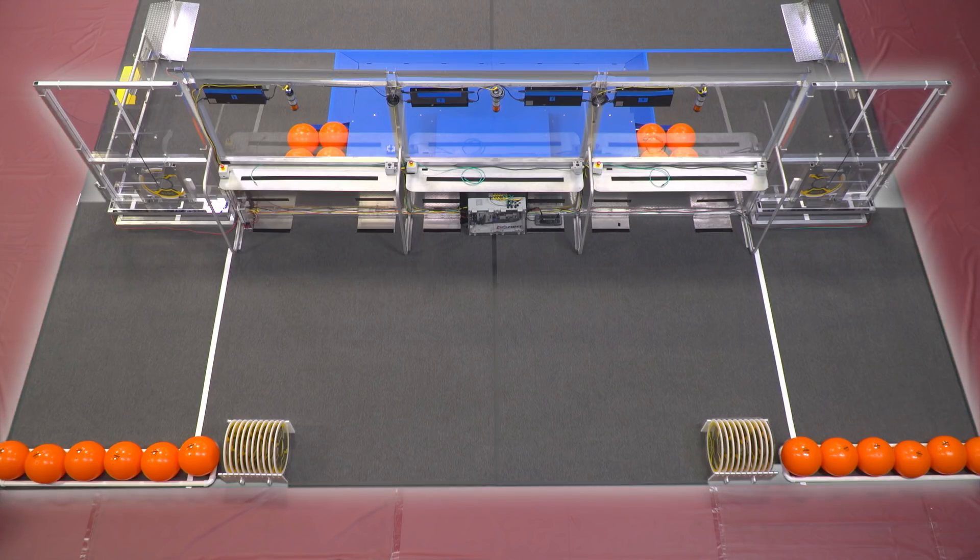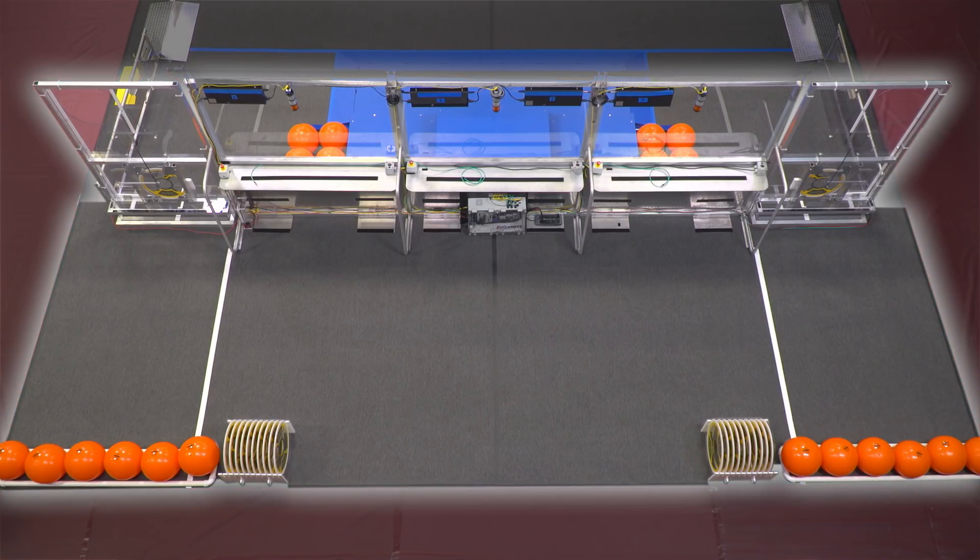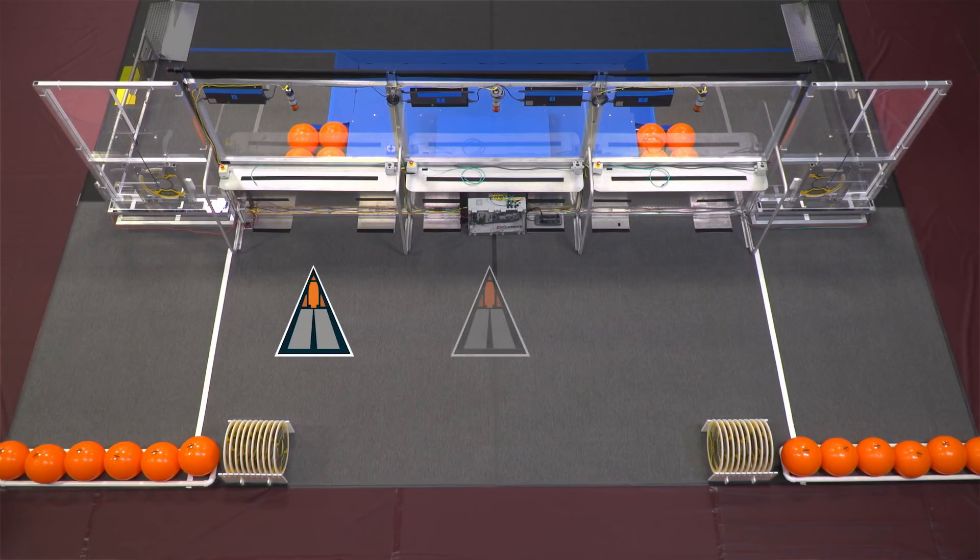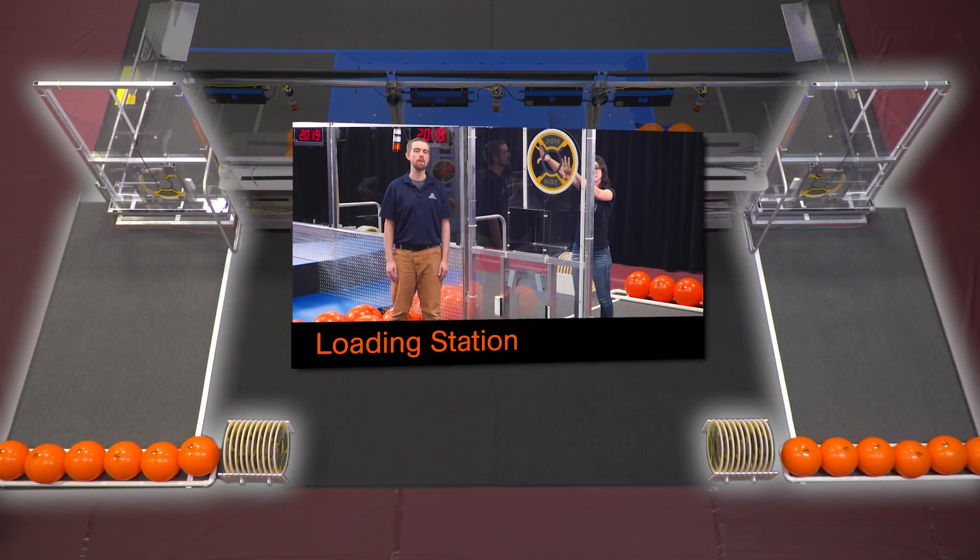The Alliance Station is the area behind the Alliance wall where Drive teams play the game. It has three player stations, each adjacent to each other. At each end is a loading station. Watch Alex and Jasmine's video to learn more about those.